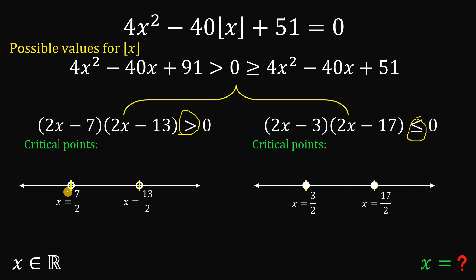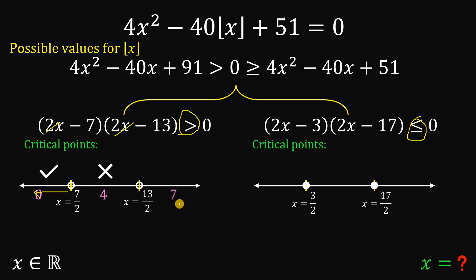Using a number line with test values: for a number less than 3.5, let's use 0 — we get negative 7 times negative 13, a positive number greater than 0, so this region is good. With test value 4 (between 3.5 and 6.5), we get positive times negative, which is negative — not greater than 0, so this region is excluded. With test value 7 (greater than 6.5), we get a positive number greater than 0. So the first inequality is satisfied for x less than 7/2 or x greater than 13/2.